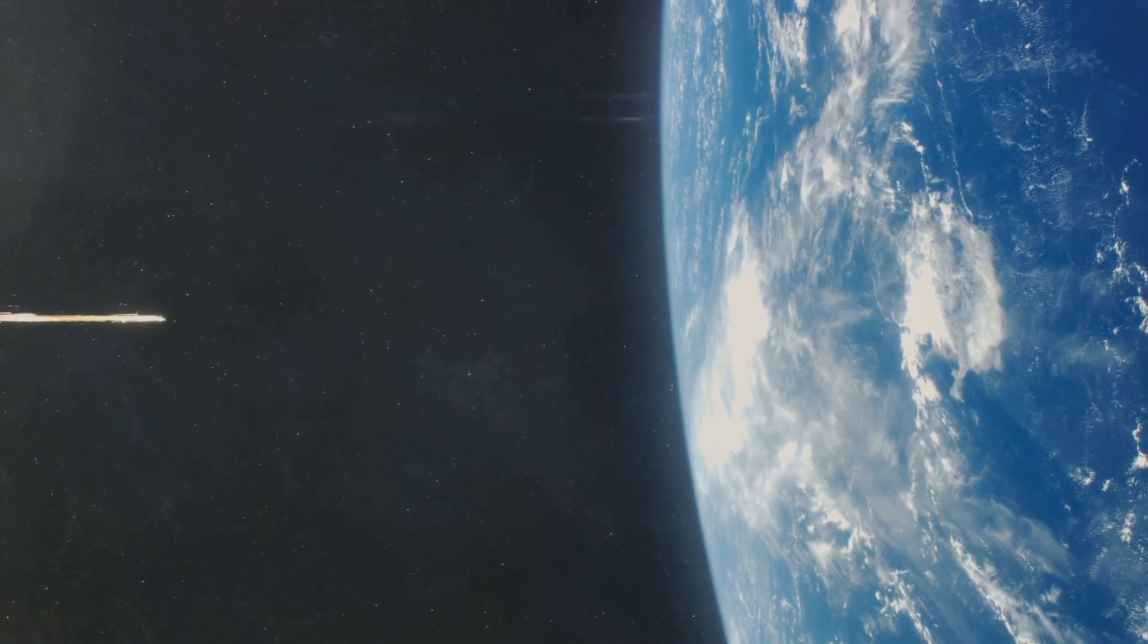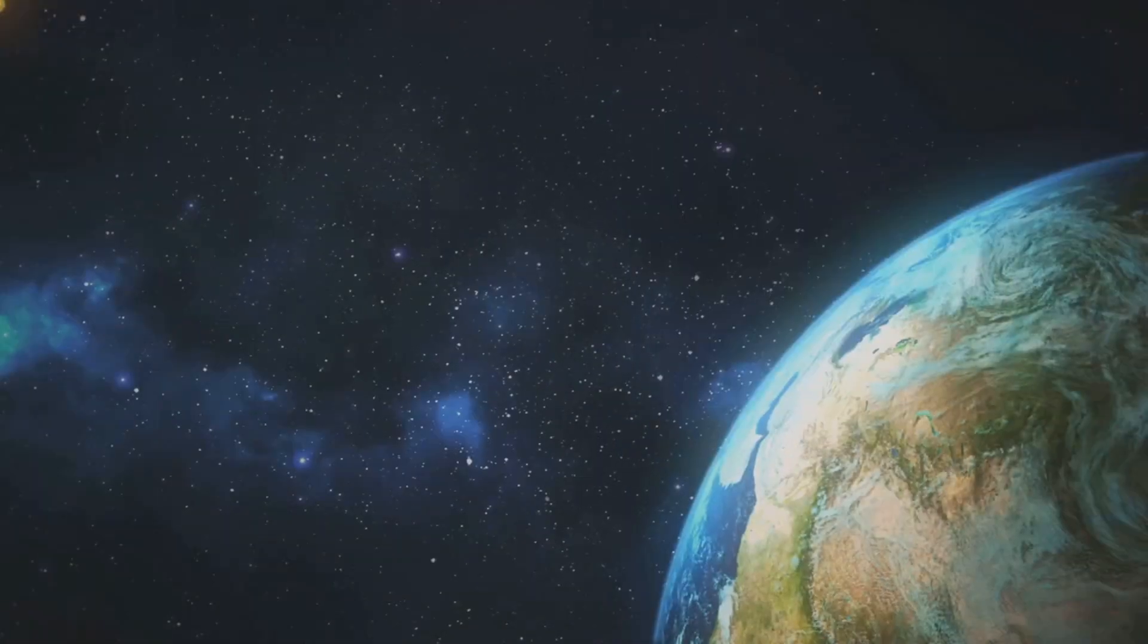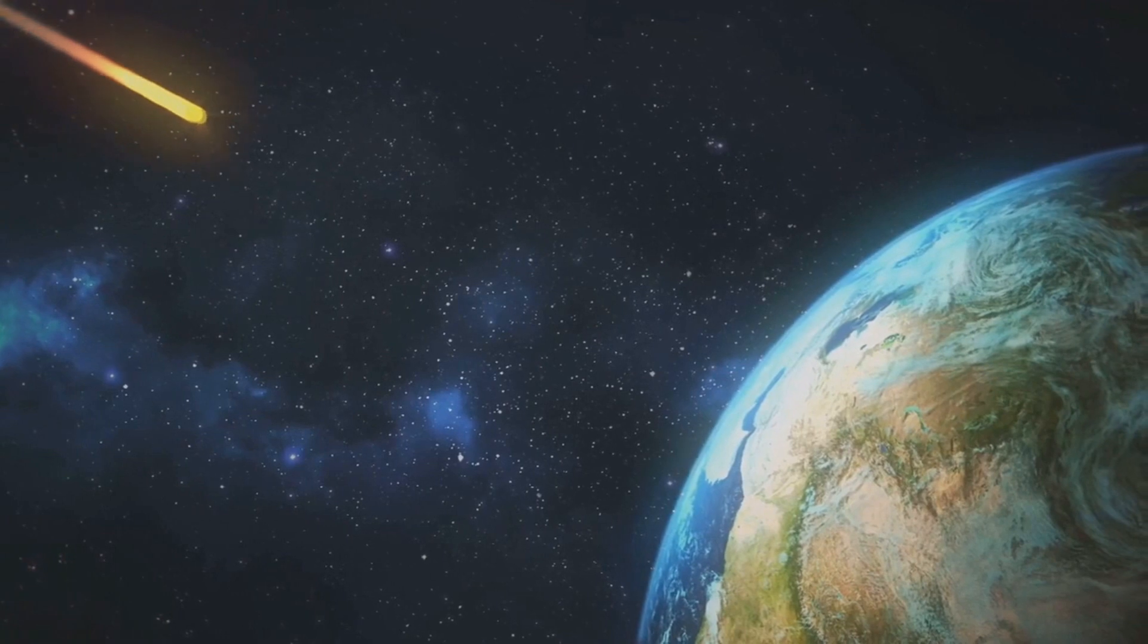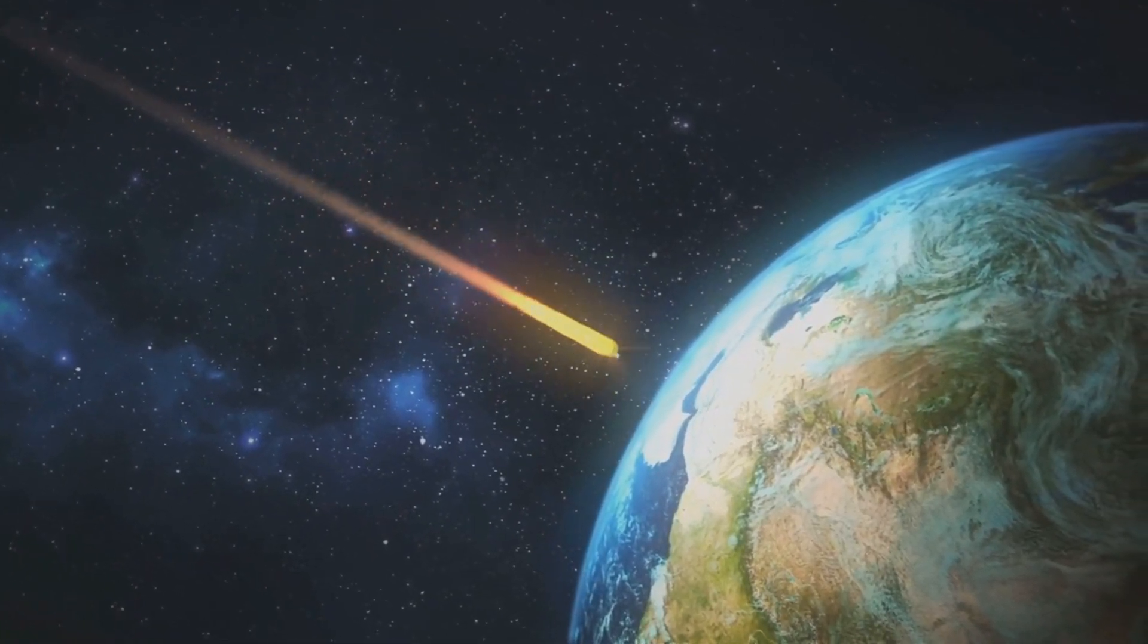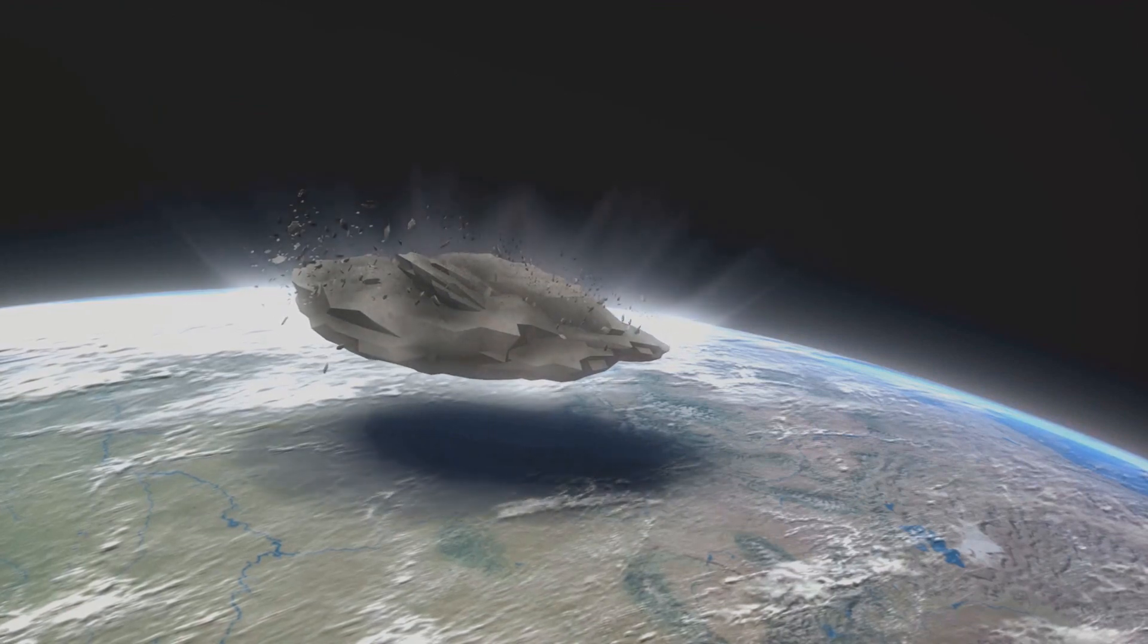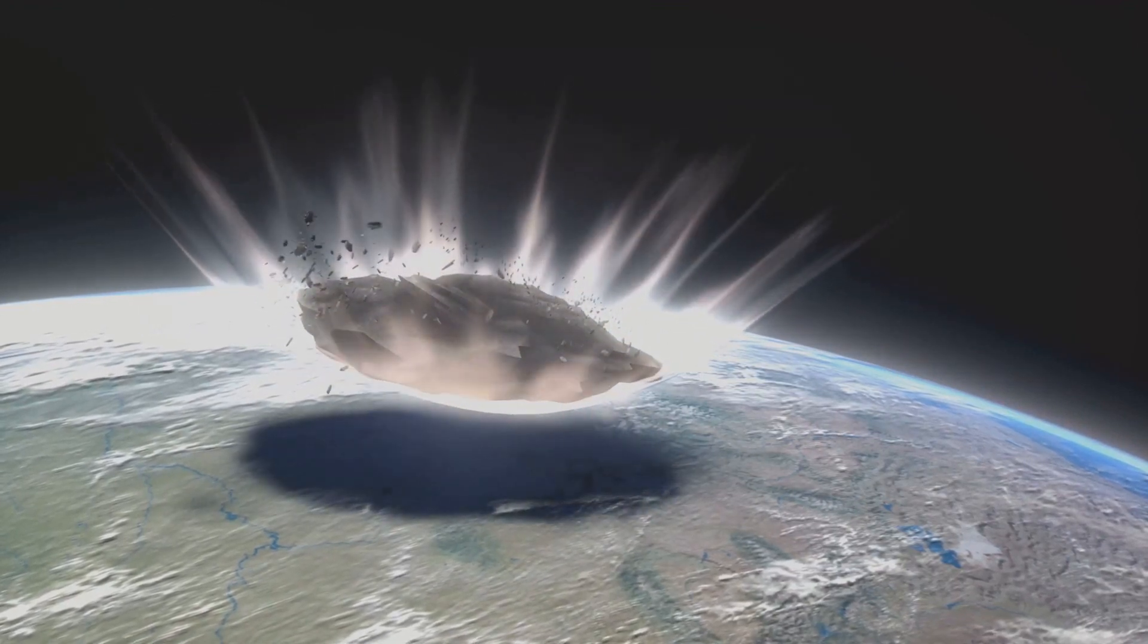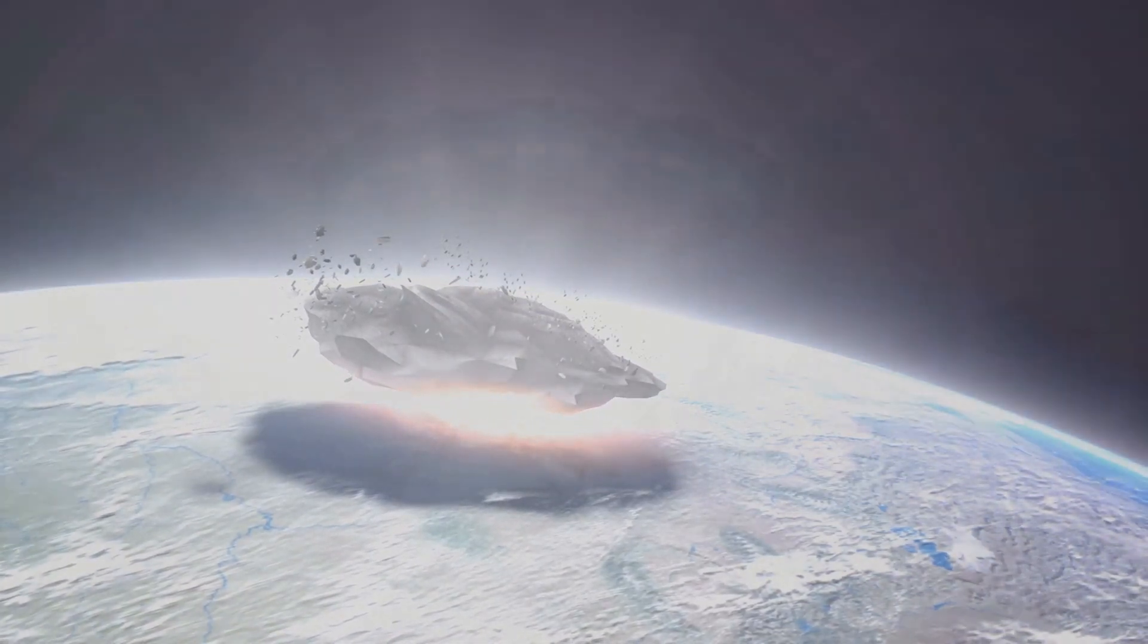In the Grand Cosmic Lottery, Earth has been lucky so far. But the universe is a vast and unpredictable place. Scientists estimate that there are millions of asteroids in our solar system alone, any of which could change the course of life on Earth in an instant. It's a scary thought, isn't it?